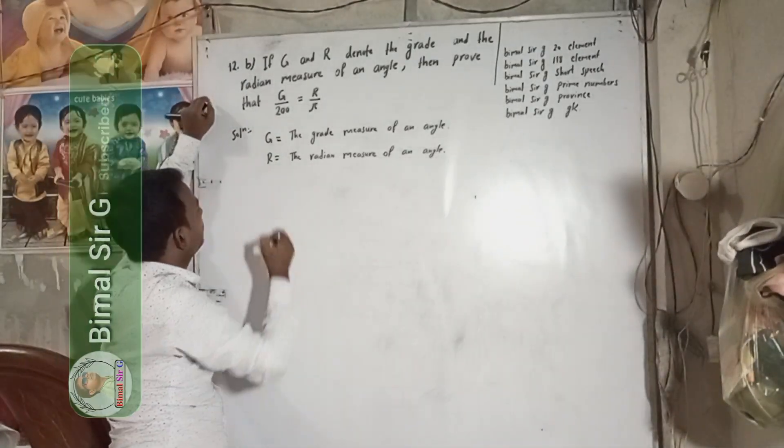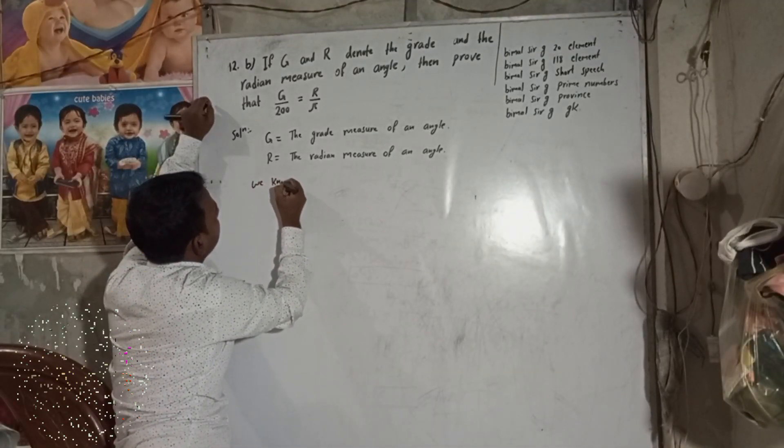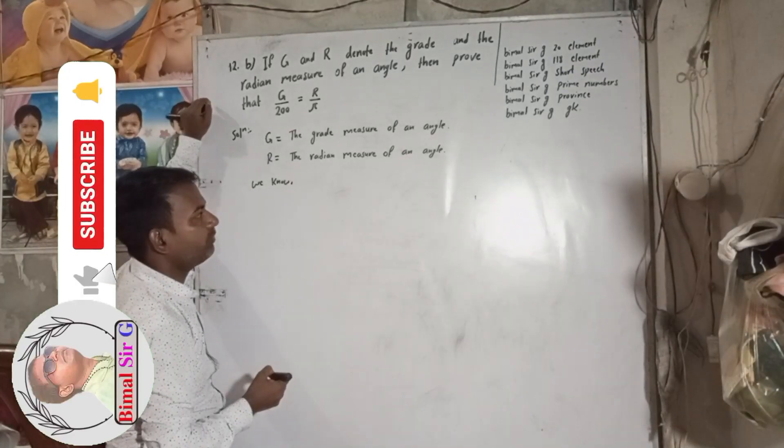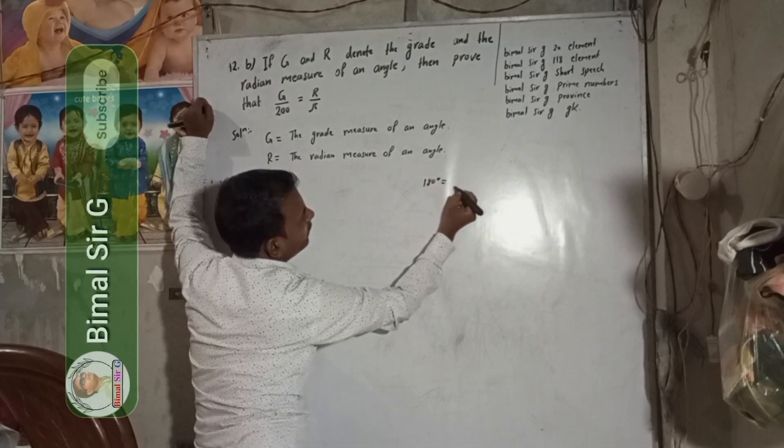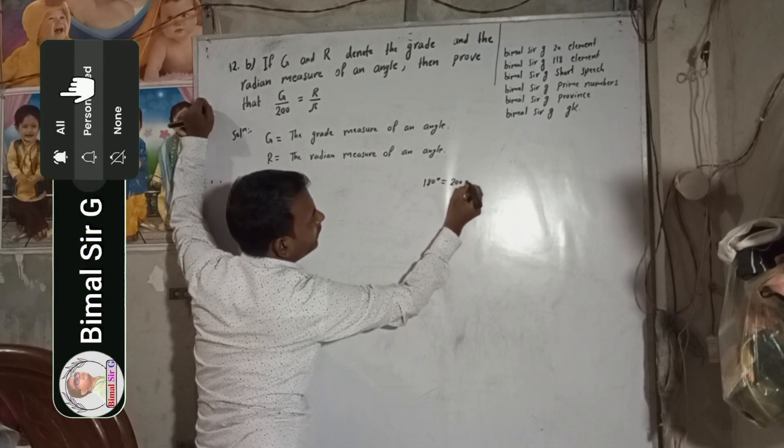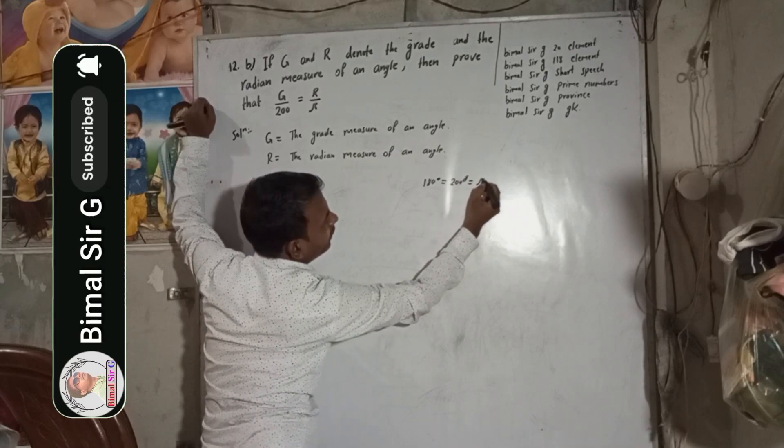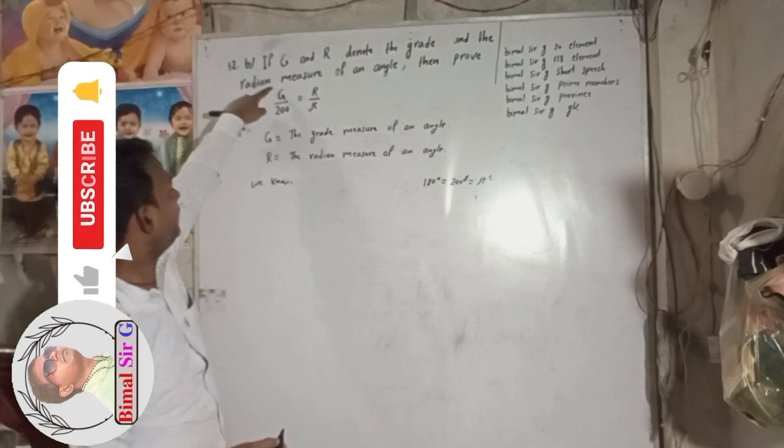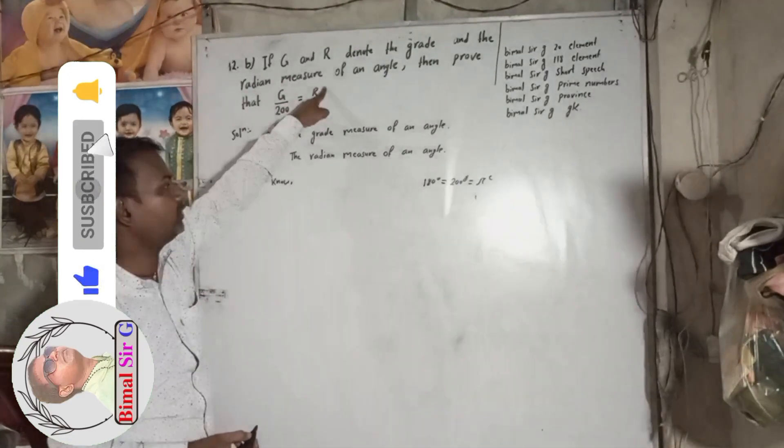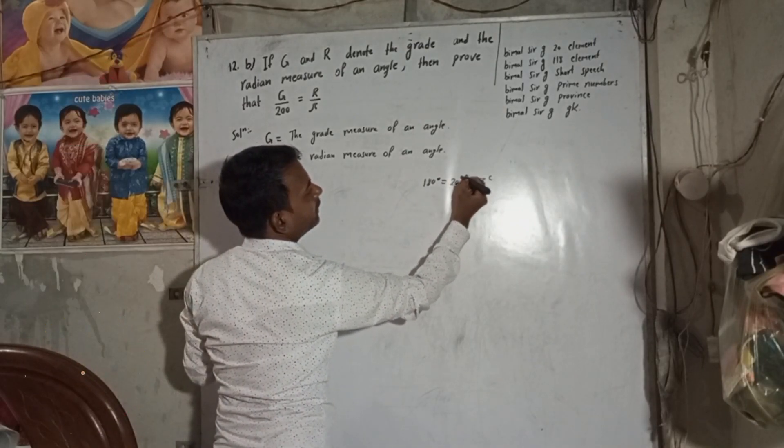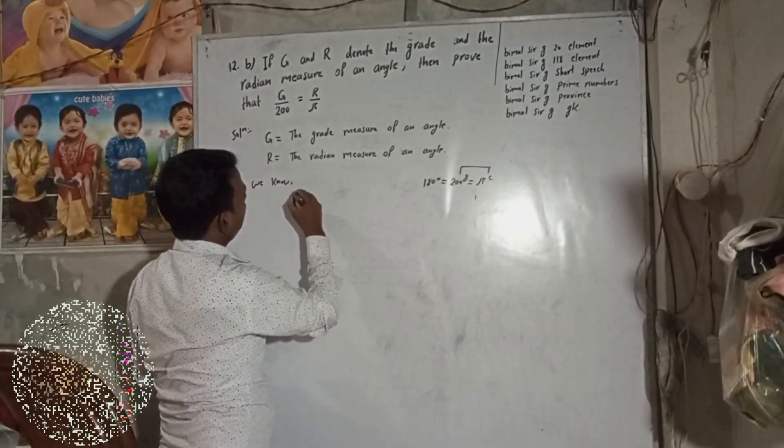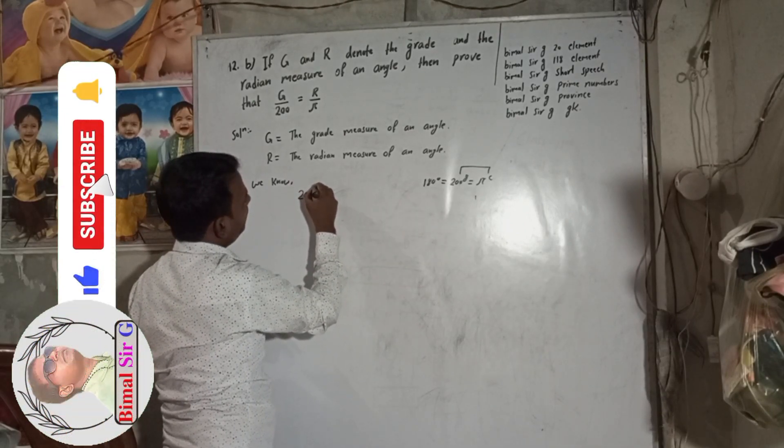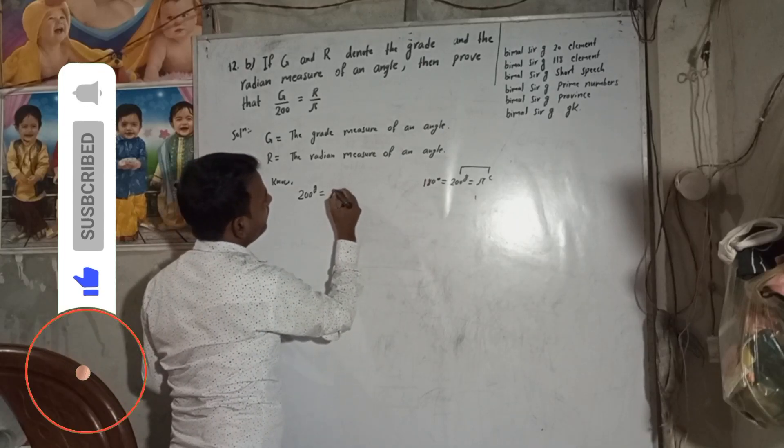Now, we have to write here what? We know. We should remember here one relation. 180 degree is equal to 200 grade is equal to pi radian. Here is our grade and radian. We have to take these two relations. We can write here, we know, 200 grade is equal to pi radian.